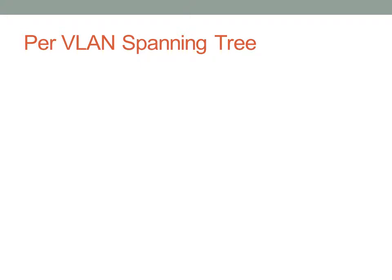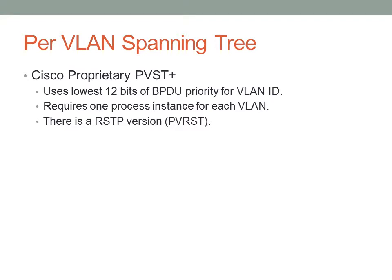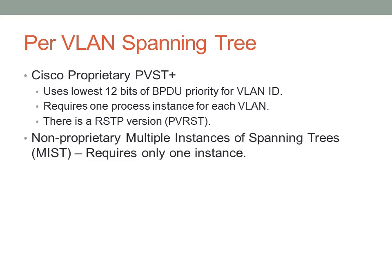We also have to address multiple broadcast domains spanning multiple switches. Cisco's proprietary solution is Per-VLAN SpanningTree Plus (PVST+). The lowest 12 bits of the priority are used for the VLAN ID, with one SpanningTree instance per VLAN. A switch with three VLANs runs three instances of SpanningTree, effectively acting like three different switches. There's also a Rapid SpanningTree version called Per-VLAN Rapid SpanningTree. Another option is Multiple Instances of SpanningTree (MSTP), which manages SpanningTree across VLANs without requiring one instance per VLAN, though that's not covered for CCNA.